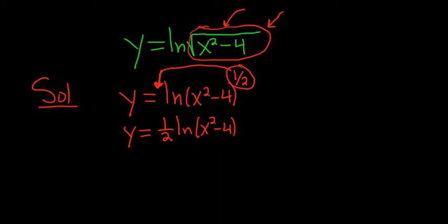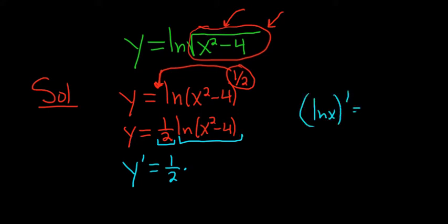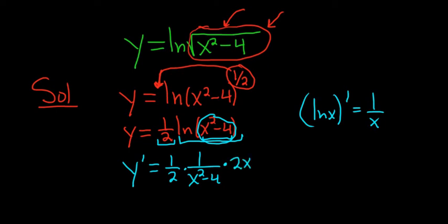Now we're ready to take the derivative. So y prime — the 1/2 is a constant, so it hangs out. Then we take this derivative: the derivative of ln x is 1 over x, that's a formula. So here it's 1 over x squared minus 4, times the derivative of the inside. The derivative of x squared is 2x, the derivative of 4 is 0. The 2's cancel, so we end up with x over x squared minus 4.